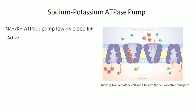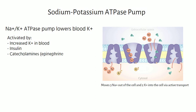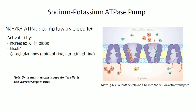The pump does this by moving three sodium ions out of the cell and transporting two potassium ions into the cell via active transport. The sodium-potassium ATPase pump is activated by increased potassium in the blood, insulin, and catecholamines such as epinephrine and norepinephrine. In addition, beta-adrenergic agonists have similar effects and lower blood potassium levels, including drugs such as pseudoephedrine and albuterol.